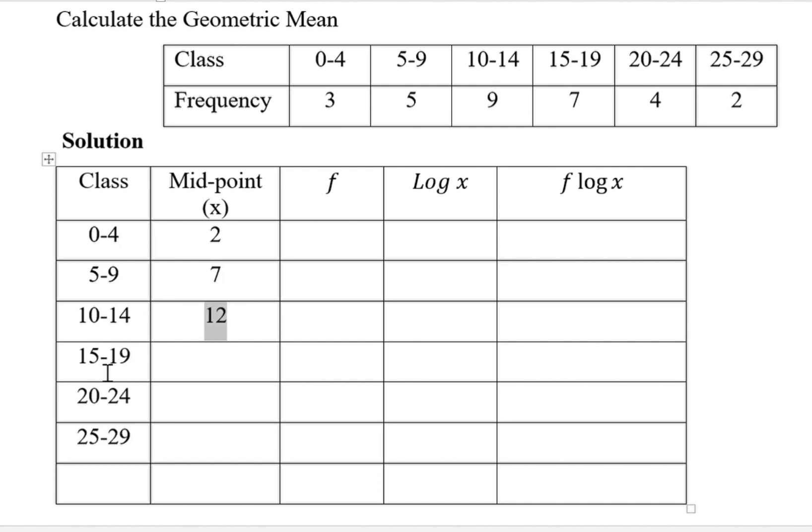This one, if you add them and divide by 2, you get 17. 20 plus 24, divide by 2 gives us 22. And this one will give us 27.